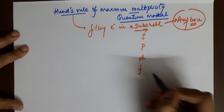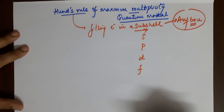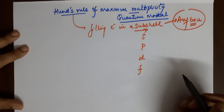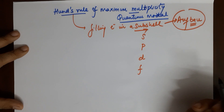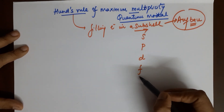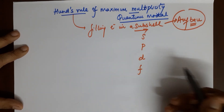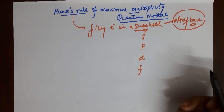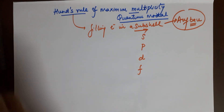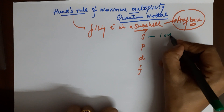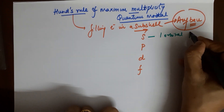When we talk about subshells, the ones known to us are S, P, D, and F. Beyond that we have G, H, I, J, but as of now we don't require them. Till elements with atomic number 120 you are happy with S, P, D, and F. So your subshells are S, P, D, F.